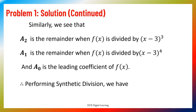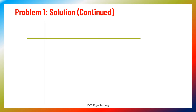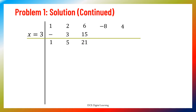Therefore, for forming synthetic division: draw horizontal and vertical lines, write the coefficients of f(x) as 1, 2, 6, −8, 4, and take the multiplier x equals 3. Keep the leading coefficient 1 as it is. Multiply 1 and 3 to get 3; add 2 and 3 to get 5; multiply 3 and 5 to get 15; add 6 and 15 to get 21; multiply 3 and 21 to get 63; add −8 and 63 to get 55; multiply 3 and 55 to get 165; add 4 and 165 to get 169, which is a₄.